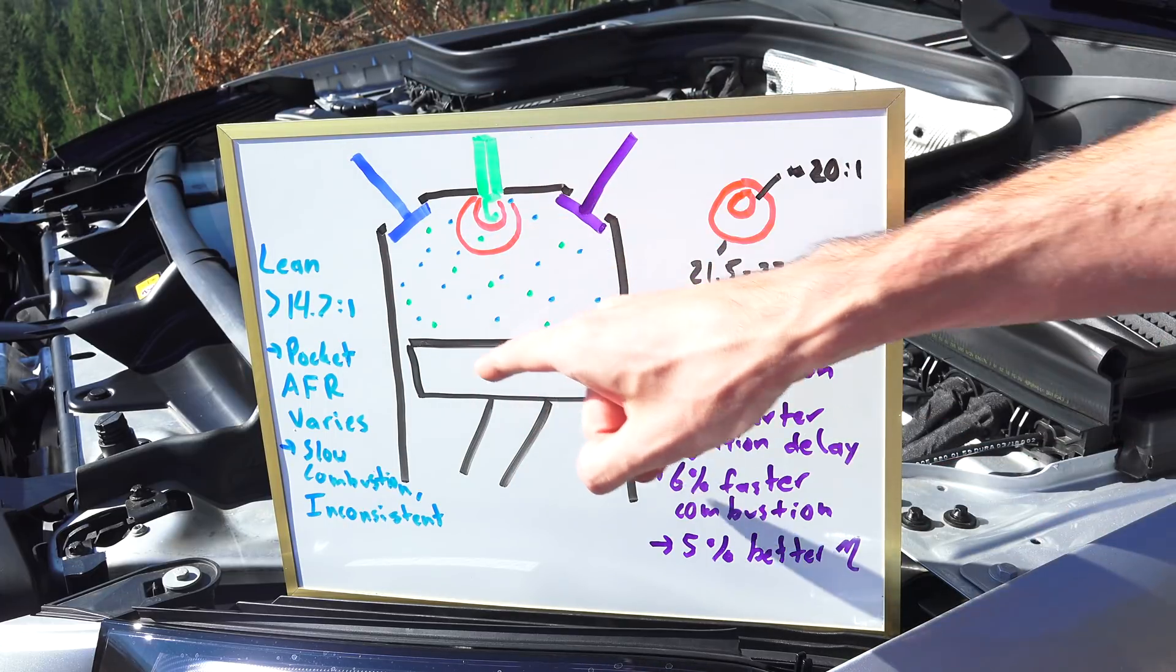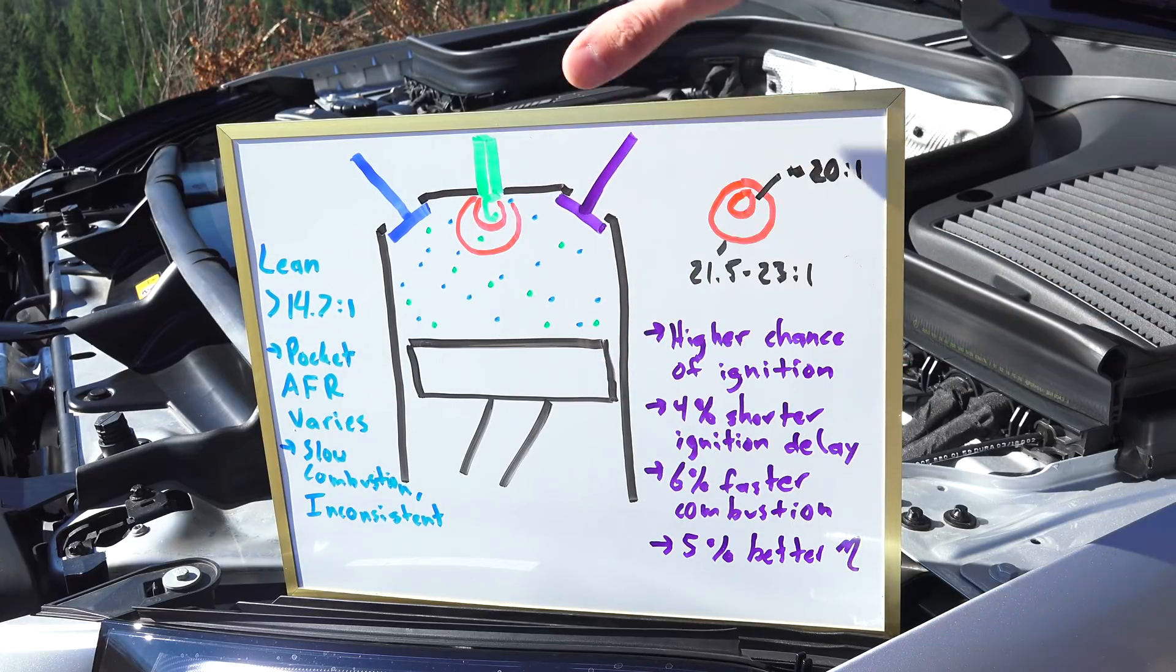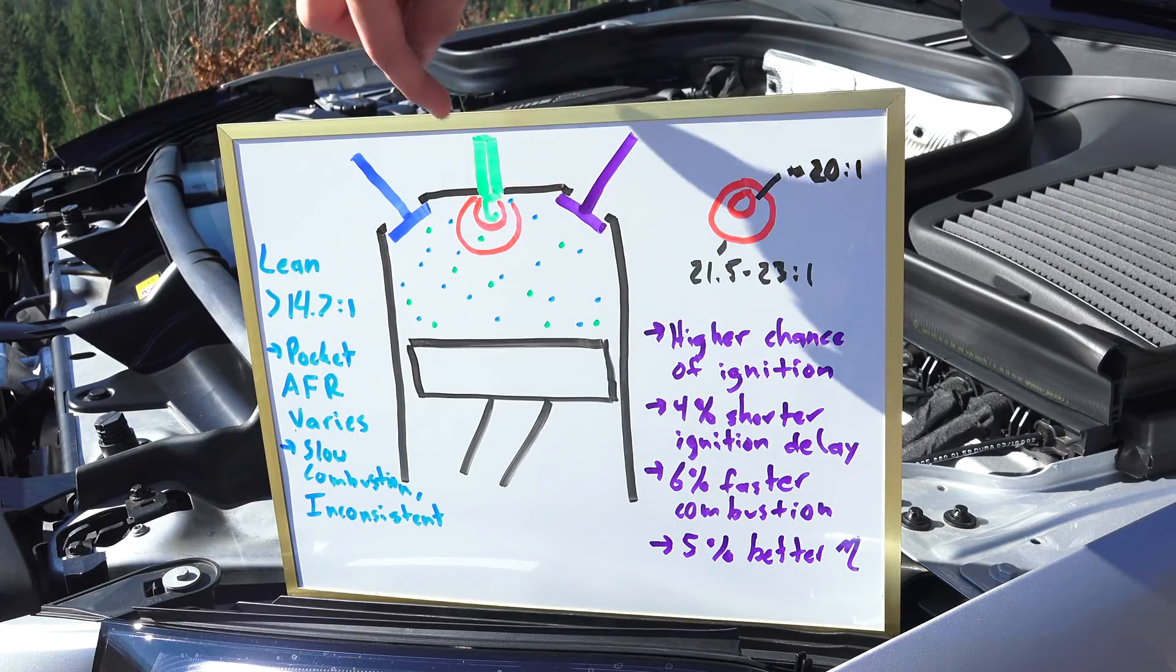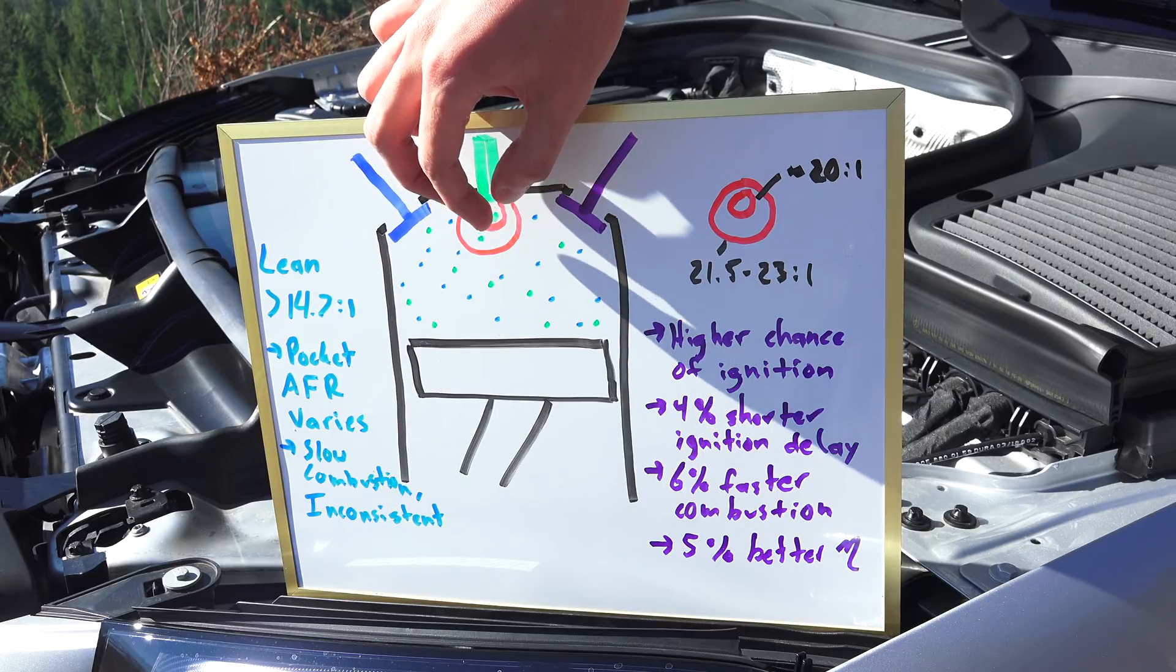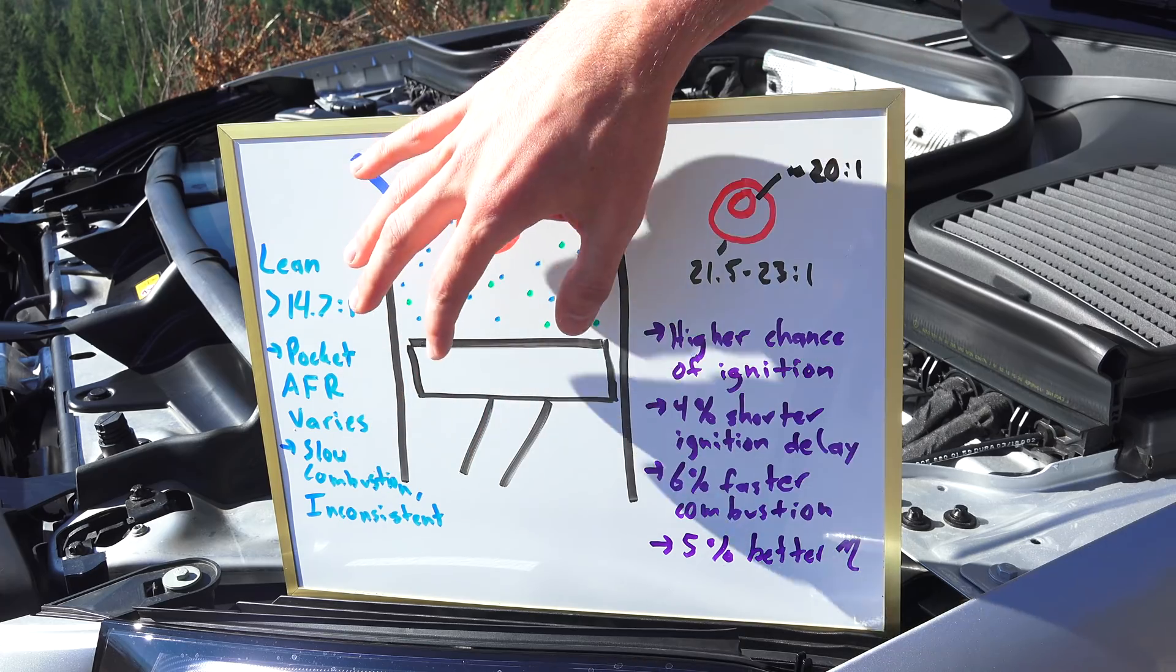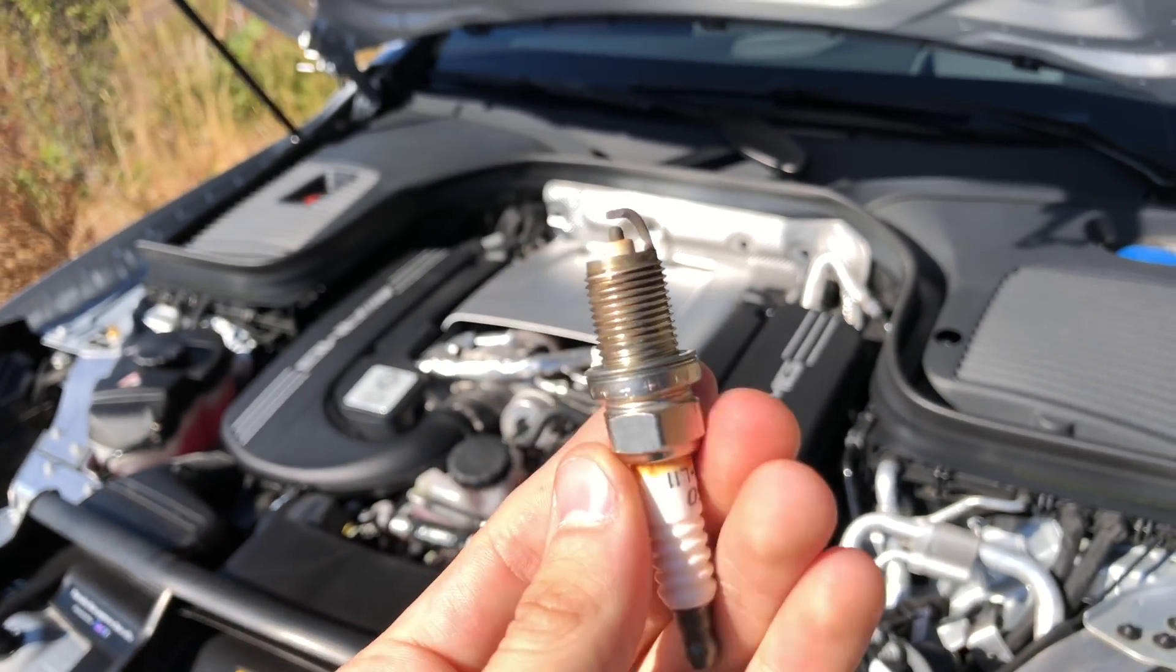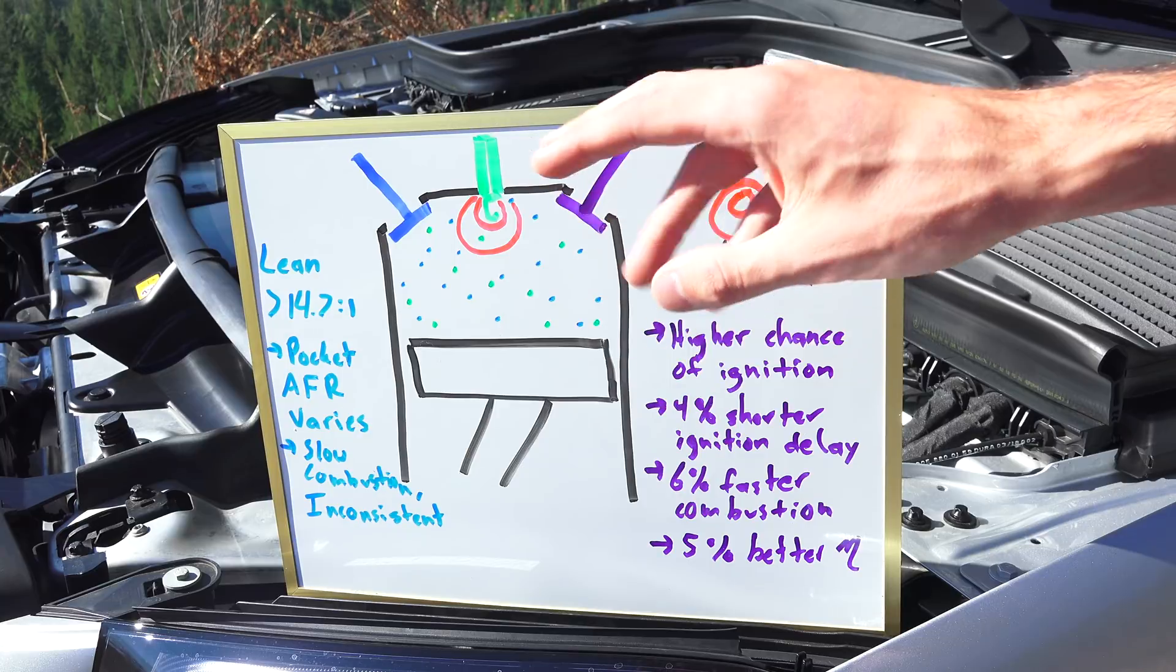Now when you have a lean mixture, one of the challenges is that you have inconsistent combustion. And the reason for this is because you have different pockets with varying air fuel ratios throughout that mixture. And so when you try to ignite it, you're hoping that you have a good air fuel mixture near this spark plug so that you can start ignition and then have that flame spread out and combust all of the air and fuel. The challenge, however, is that because you don't know what the air fuel ratio is going to be near the spark plug, it's challenging to predict how consistent combustion is going to be.